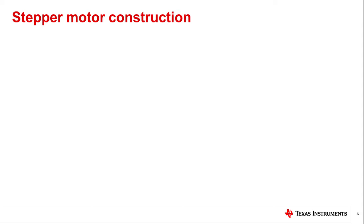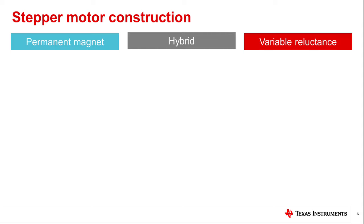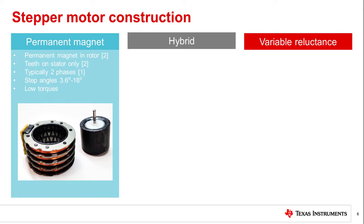Stepper motors come in one of three main types: permanent magnet, hybrid, and variable reluctance. The permanent magnet stepper motor has a permanent magnet on the rotor. The winding coils are oriented around the same axis as the rotor. Rotor teeth on the stator help to direct the magnetic field from the rotor to interact with the windings on the stator. The magnetic poles on the rotor are oriented parallel to the rotor's rotational axis on the surface of the rotor.